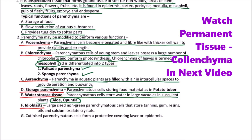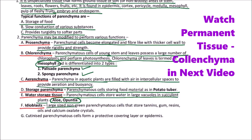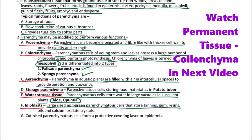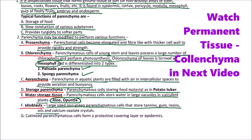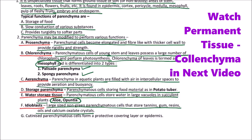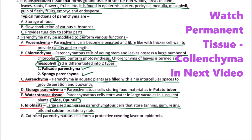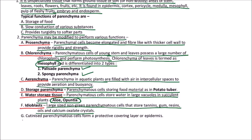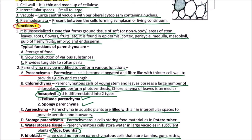Idioblast: large, non-green parenchyma cells that store tannins, gums, resins, oils, and calcium oxalate crystals are said to be idioblasts. Cutinized parenchyma cells may also form a protective covering layer or epidermis over the soft plant body parts.